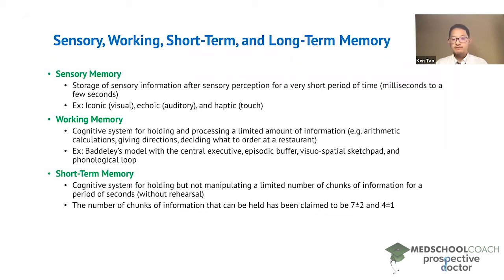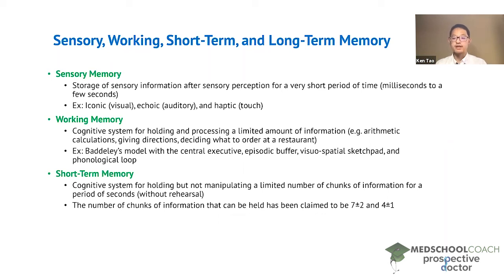The number of chunks of information that can be held is a bit controversial. A lot of people go by the number 7 plus or minus 2, based on a very old study that was not meant to give a precise number and did not have a lot of evidence to back it up. While 7 plus or minus 2 is still used, the more precise number would be 4 plus or minus 1, based on more recent evidence.